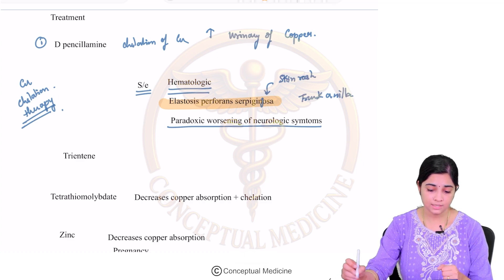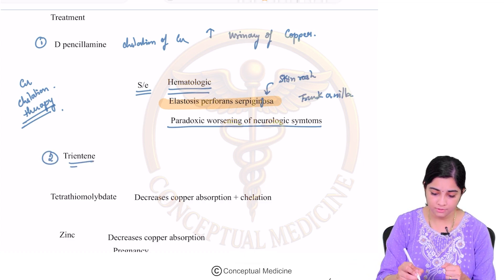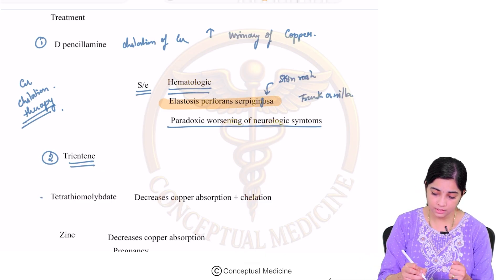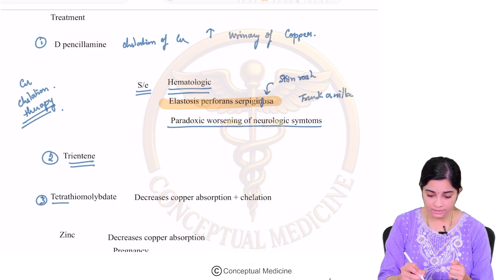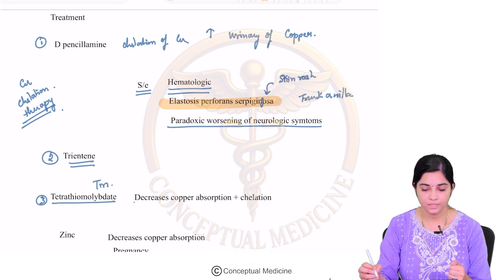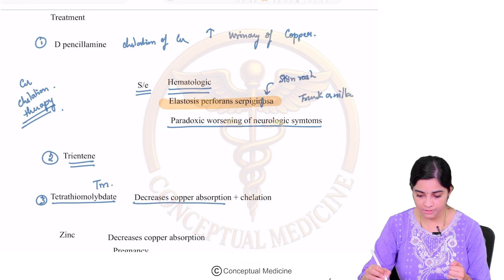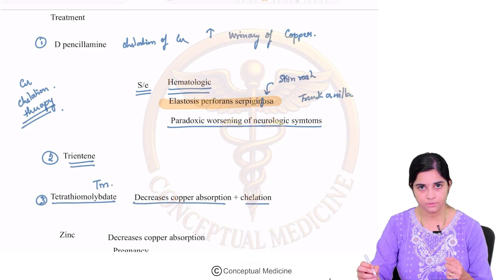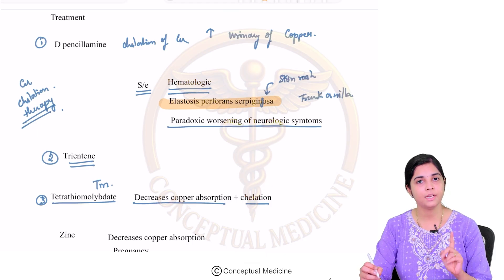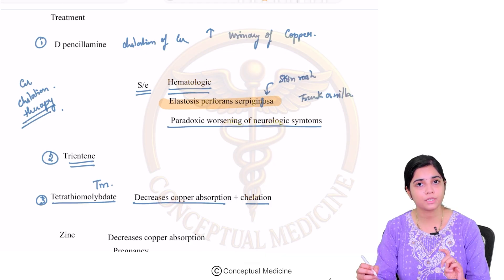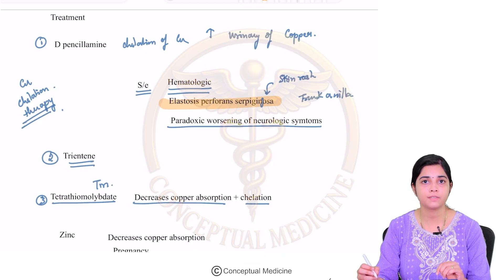In cases of paradoxical worsening, another copper chelator you can use is trientine. A third newer drug being used is tetrathiomolybdate or TM. This decreases copper absorption as well as acts as a chelator — it has dual action. It has been recently approved for the management of Wilson's disease.